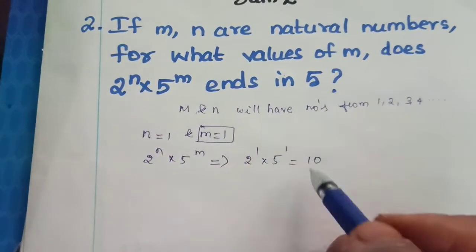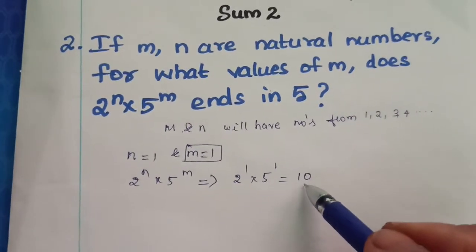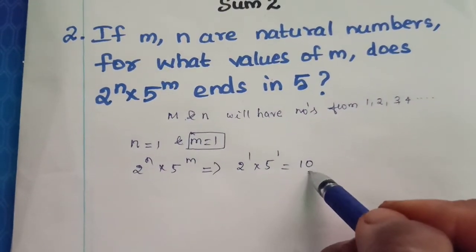So here we are not getting, when m is equal to 1, we are not getting the answer ends in 5. It is clearly shown it ends in 0.